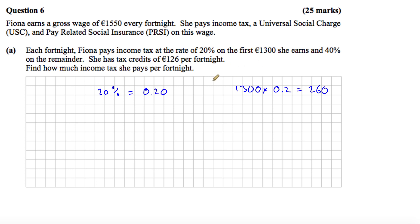She then pays 40% on the remainder. Well, the question is what's the remainder. It'll be €1,550 take away €1,300, and that leaves €250. So the remainder is €250. And we're going to find 40% of that. Well, 40% as a decimal is 0.40 or 0.4. So we're going to multiply the €250 by 0.4 to get the 40% of that, which gives us €100.